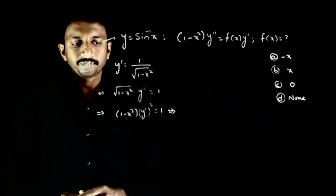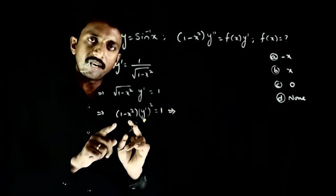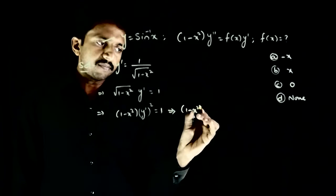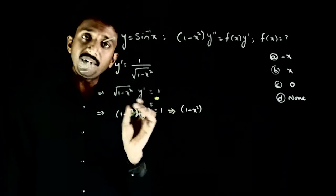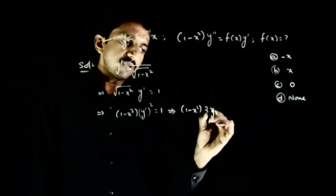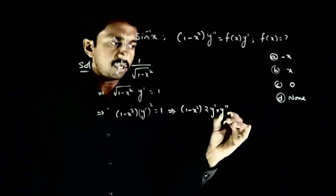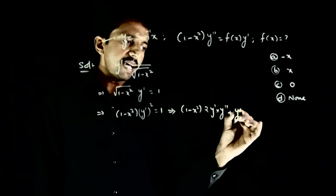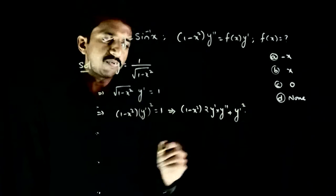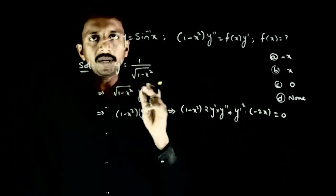Now I will differentiate both sides. Using the uv method on the left side: 1 minus x squared times the differentiation of y dash squared, which is 2 y dash into y double dash, plus y dash squared times the differentiation of 1 minus x squared, which is minus 2x, equals 0.